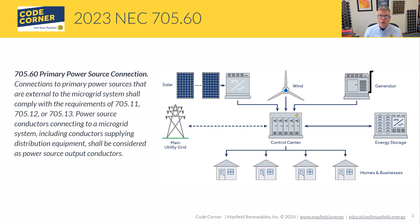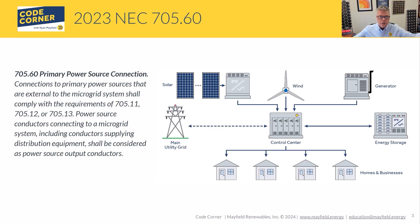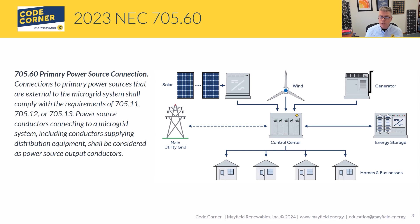Those rules apply to interconnecting our microgrid system just as they would for a straight PV system with utility. The code also states that power source conductors connecting to a microgrid system, including the conductors supplying distribution equipment, shall be considered as power source output conductors. We're going to look at the rules in 705 to size those, protect those, and address rules around loss of power — applying Article 705 across the board for those sets of conductors.